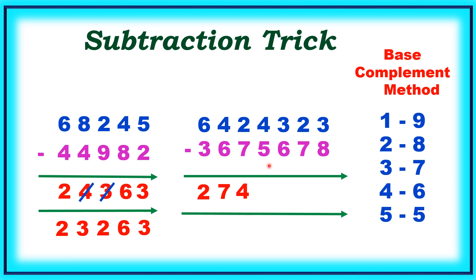Next number is also bigger one, so I will write 8. 6 complement is 4. 4 plus 3 is 7. Next number is bigger one, so I am writing 6.